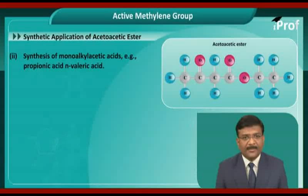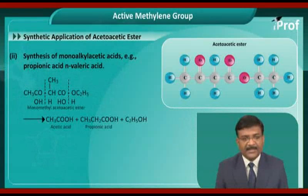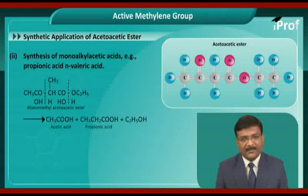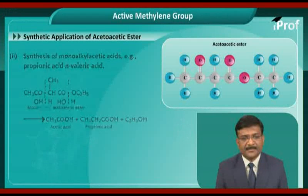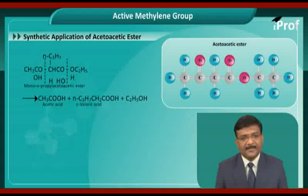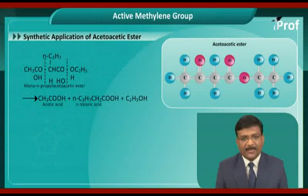Synthesis of mono-alkyl acetoacetic acid: mono-methyl acetoacetic ester when heated gives a combination of acetic acid and propionic acid along with ethyl alcohol. In the same manner, when mono-normal propyl acetoacetic ester is heated, it gives a combination of acetic acid and valeric acid along with ethyl alcohol.